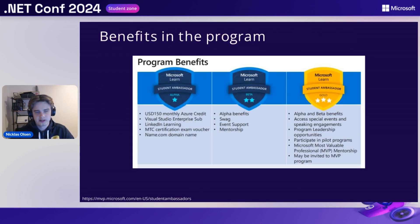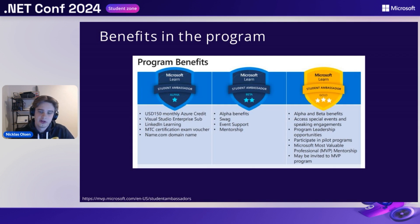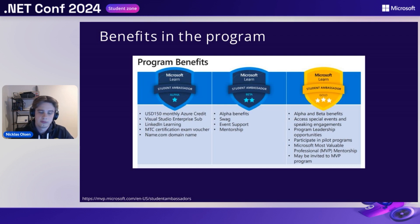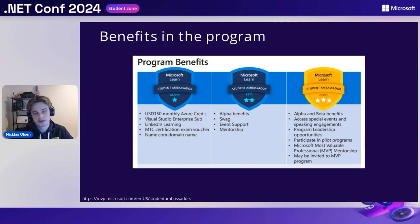So what do you actually gain as benefits in the program? Just to start off, it's not all about the benefits in general, but benefits are really nice and can really help you advance your skills as well. Just to name a few: with the alpha milestone, you will get access to the Visual Studio Enterprise subscription, LinkedIn Learning, and you will also get your own student ambassador email address. When you advance to beta, you will of course get all the alpha benefits, some swag, and you will also receive event support and mentorship as well.